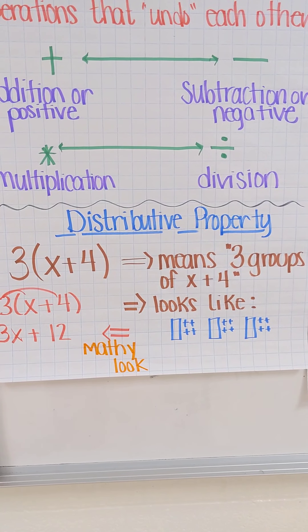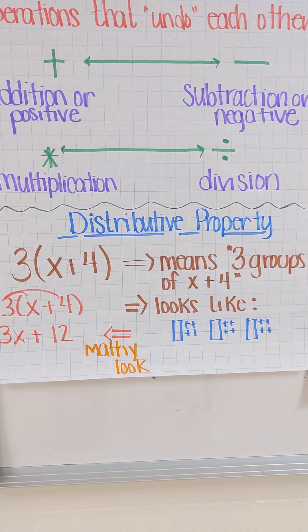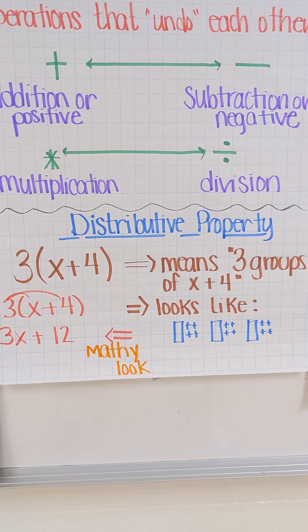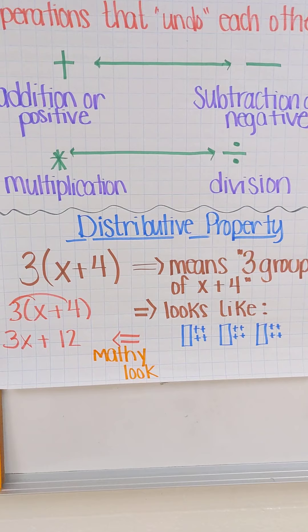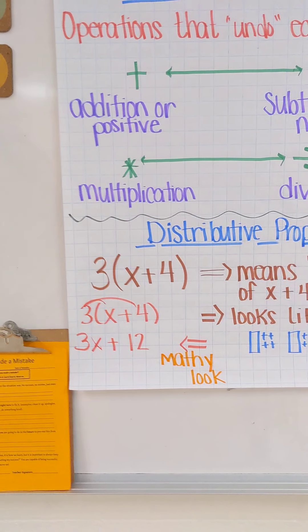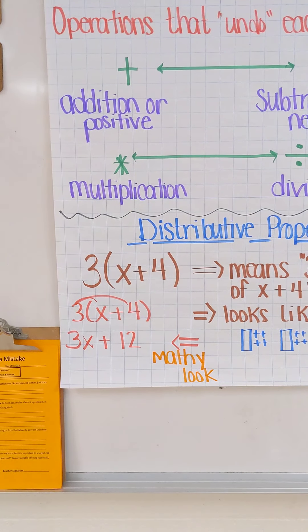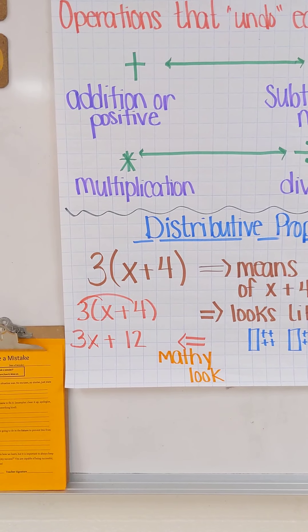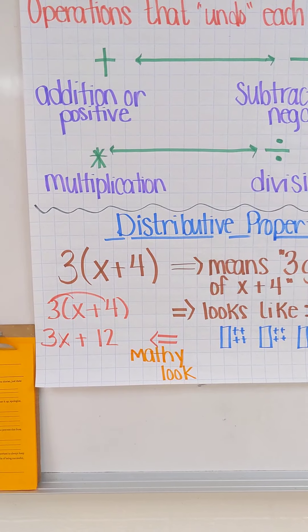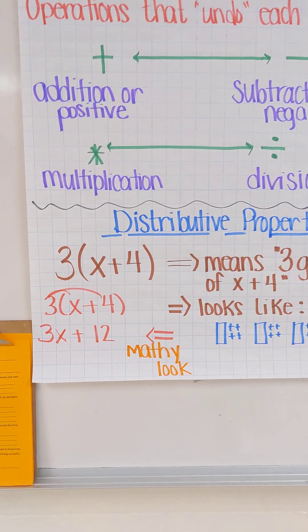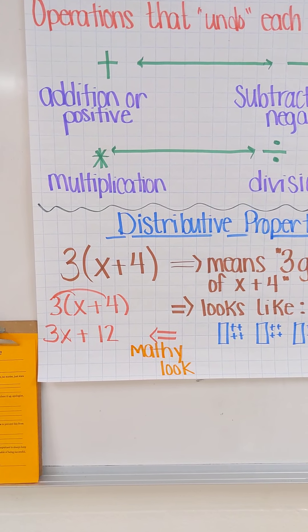I'm going to zoom in a little bit. I stress really heavily that you have 3 groups of x plus 4. That's what that means. It looks like 3x's and 4 units. Some of our students are able to kind of look at that the mathy side of it, I call it the mathy look, and distribute that through or multiply those values through. Because they know that it looks like 3x's and 3 groups of 4, which gives you that 12.